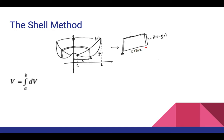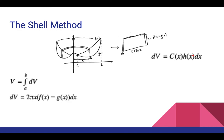As for the height of our unrolled sheet, the height is going to be the difference between f of x and g of x, so height equals f(x) minus g(x). The volume of this cylindrical sheet, dV, equals the circumference times the height times the thickness — that is, circumference times height times dx. So dV equals 2πx times [f(x) minus g(x)] times dx.